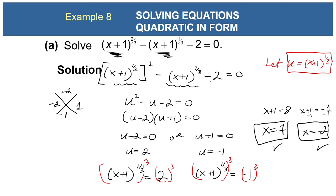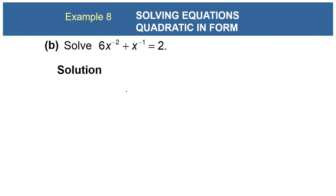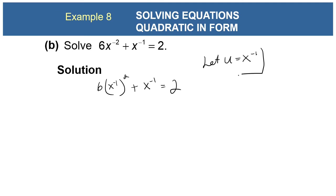In part b, solve 6x^(-2) + x^(-1) = 2. Rewrite it so there's a power of 2: the exponent inside must be -1, since (-1)×2 = -2. So rewrite as 6(x^(-1))² + x^(-1) = 2. Let u = x^(-1), giving 6u² + u = 2.